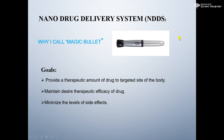Why do I call it a magic bullet? The main goals and objectives of nanodrug delivery system are to provide a therapeutic amount of drug to the targeted area — the target site of the body. There are different drug delivery systems. One of the most prominent and effective ways to deliver a drug to the targeted area is the nanodrug delivery system. The main purpose is to provide the therapeutic amount of a drug to the targeted site of the body, while the second goal is to maintain the desired therapeutic efficacy of the drug as well as to minimize the levels of side effects.